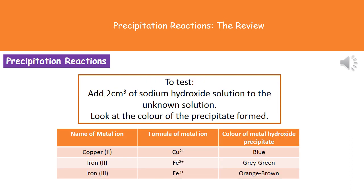The way that we carry out one of these precipitation reactions is that we start off with about two centimeters cubed of our sodium hydroxide solution, and then we're going to add that to our unknown solution. Once we do that, we'll see this solid precipitate forming in the tube. And just by looking at the color of the precipitate, we can work out which metal ion was present in our unknown solution.